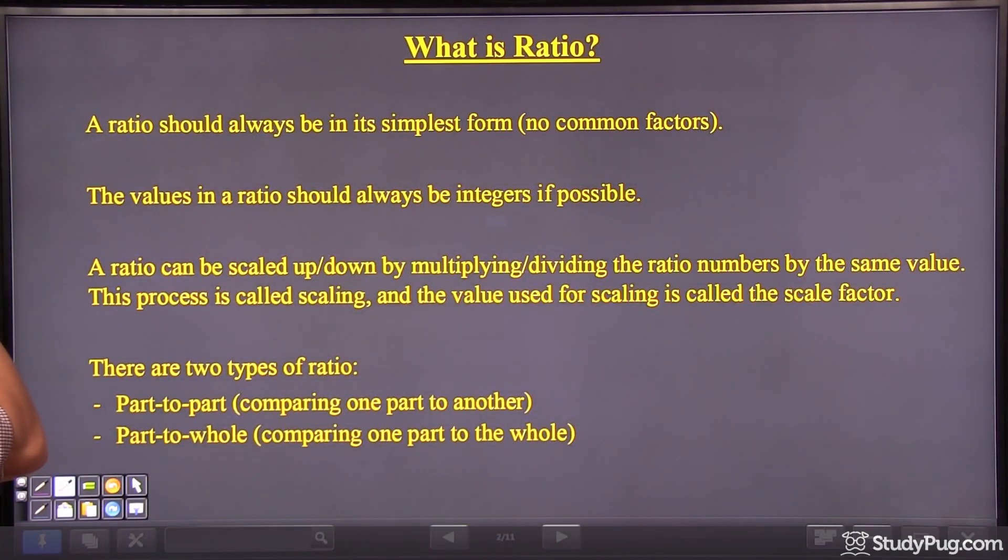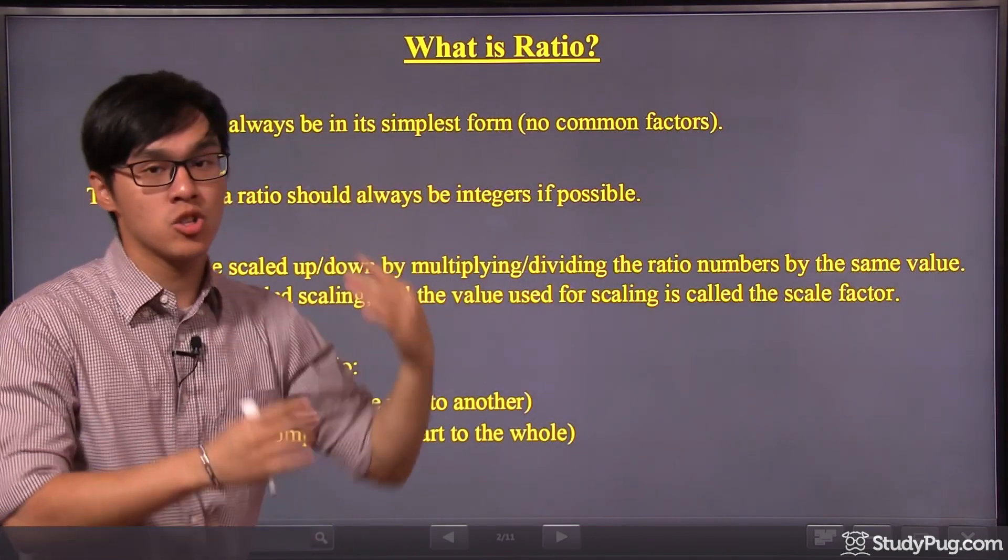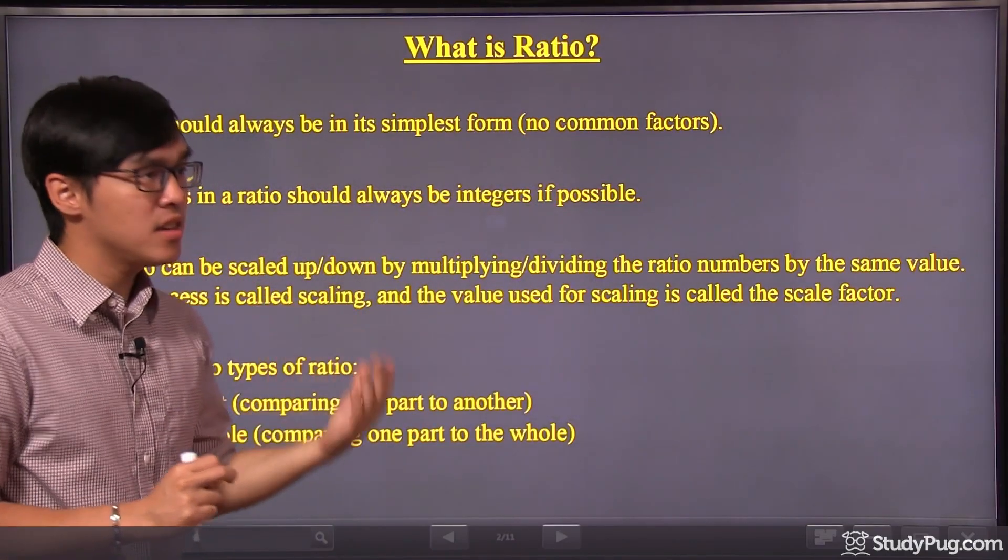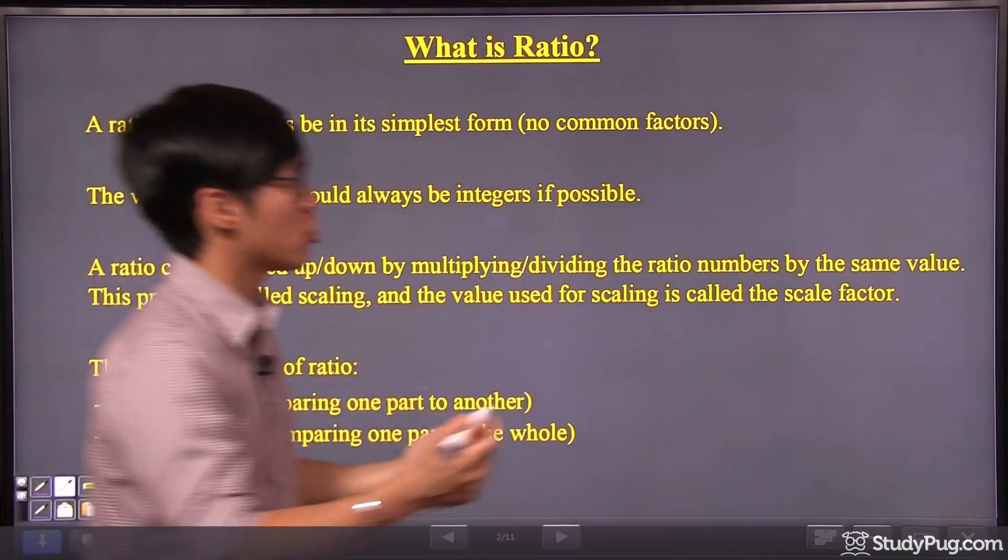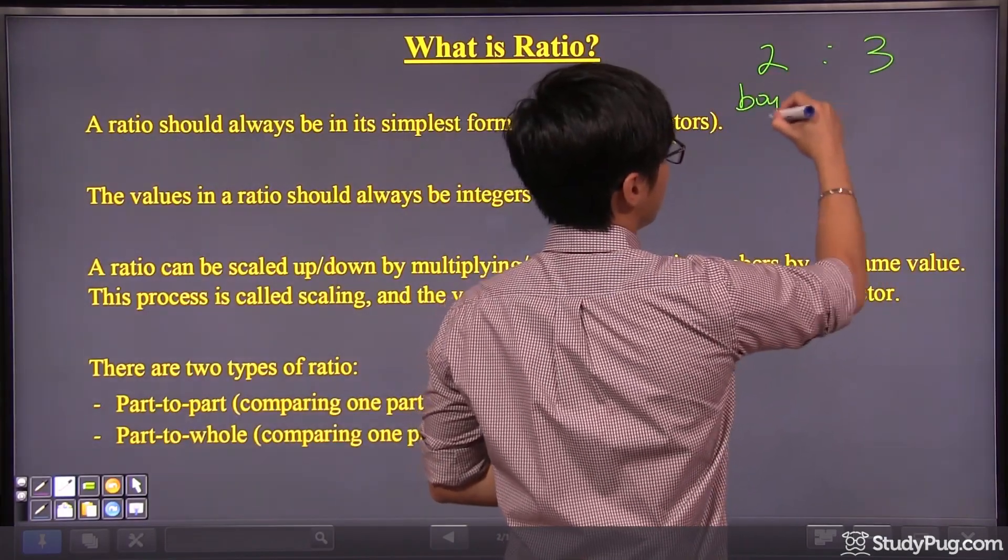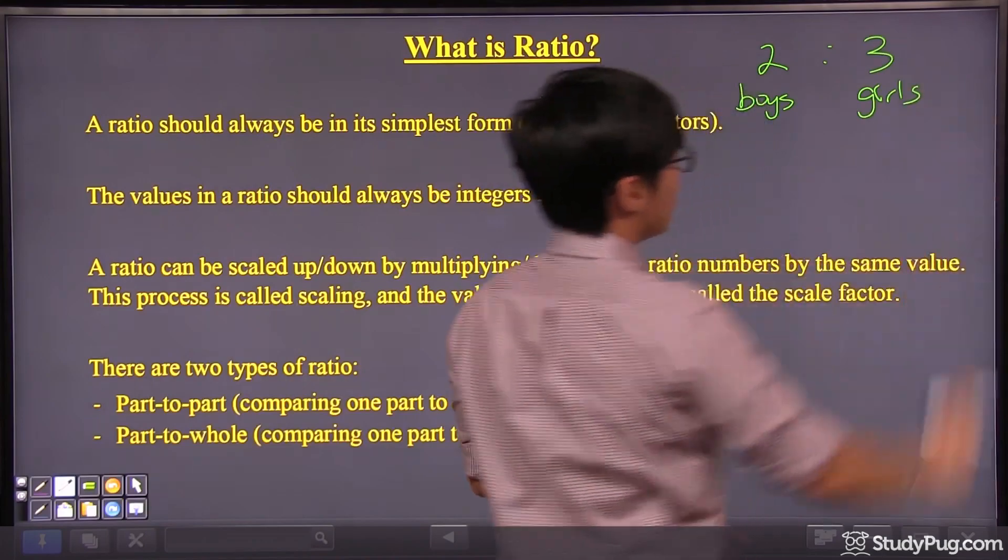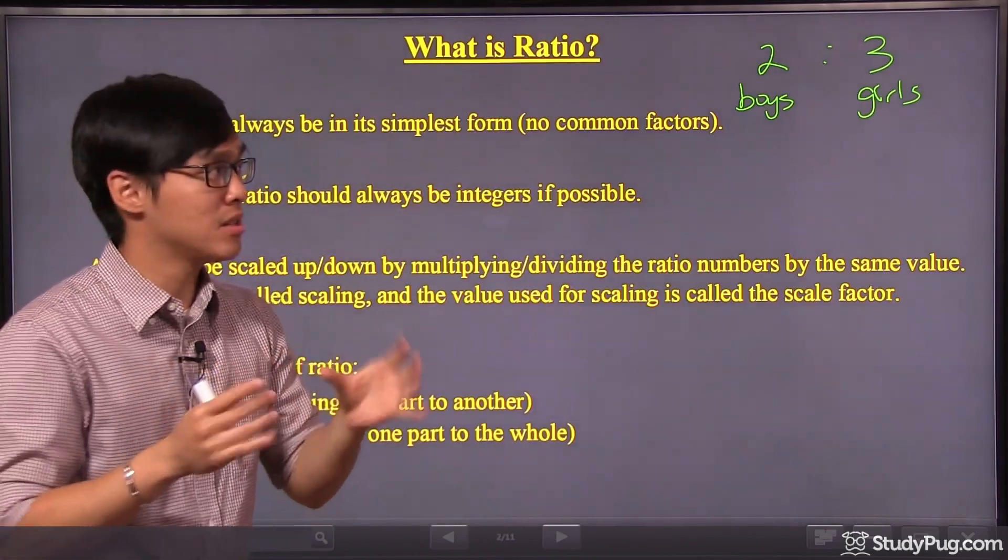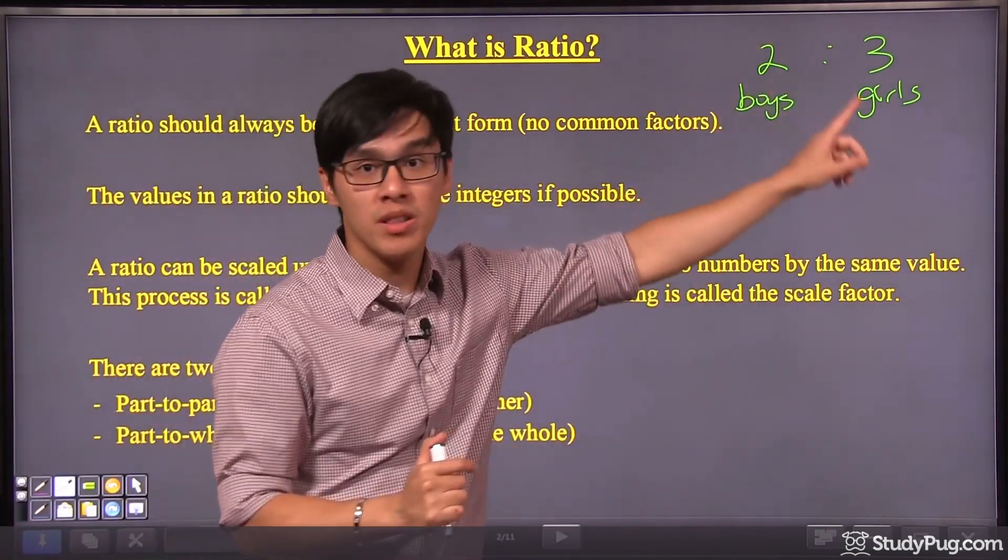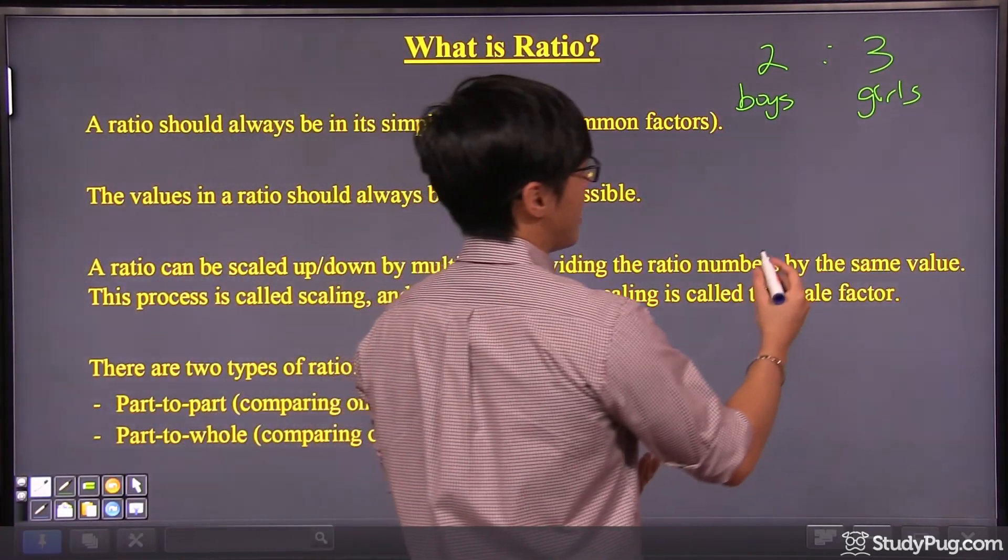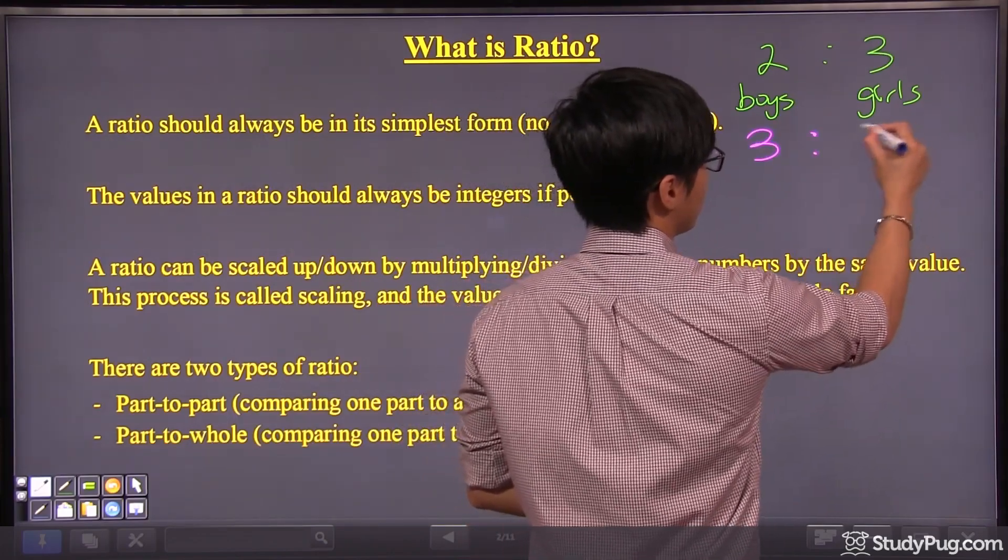Let me give you some rules. First of all, a ratio should always be in its simplest form or the so-called reduced form. That means there should be no common factors. The example that was given, boys versus girls, every two boys we have three girls. This is the boys and this is the girls. You see these two numbers, two and three, they are in reduced form already. That means there's no common multiple between these two numbers.